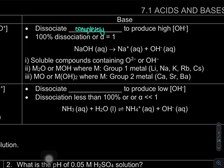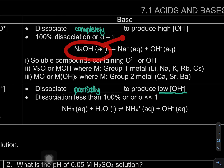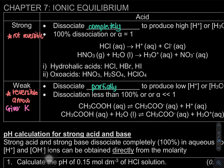A weak base dissociates partially to produce low OH⁻ concentration. Not all of the molecules form OH⁻ because dissociation is only partial. For a strong base, because it fully dissociates, the OH⁻ concentration becomes high. Again, the key hint to determine if something is weak: if the question gives you a K value, that is sufficient to tell you it is a weak acid or weak base.